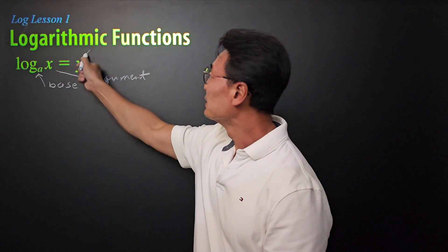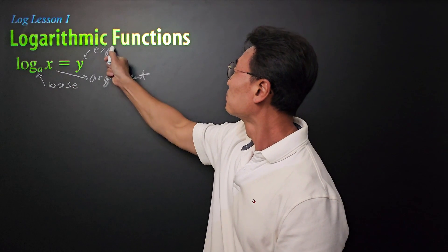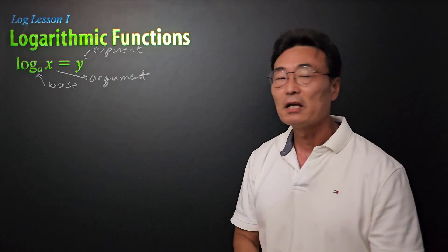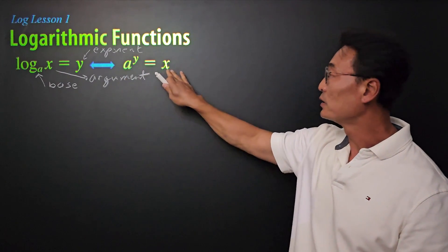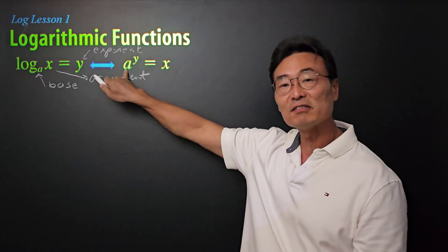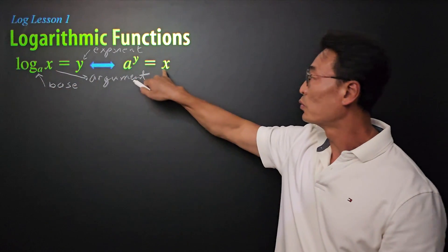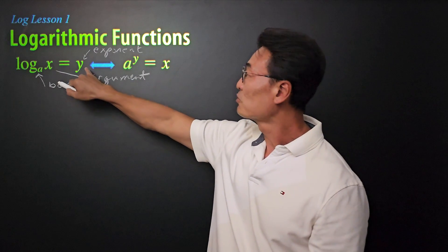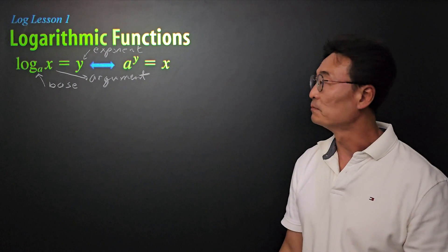And y is the exponent. That's equivalent to a to the y equals x. Again, the base is going to be the base of the exponential equation, the argument x is what goes on the right side of the equal sign, and the exponent y will again be the exponent of the exponential equation.